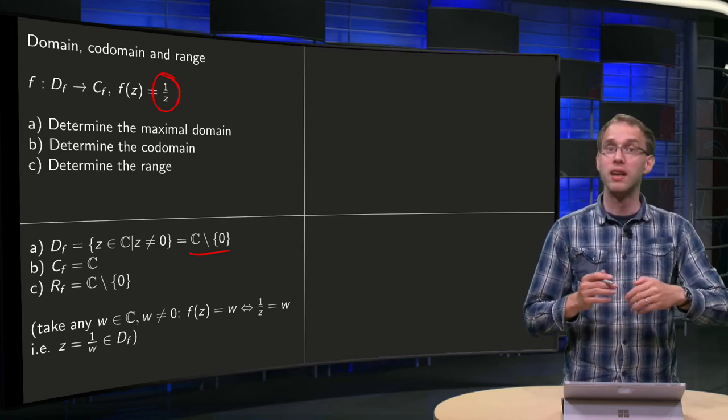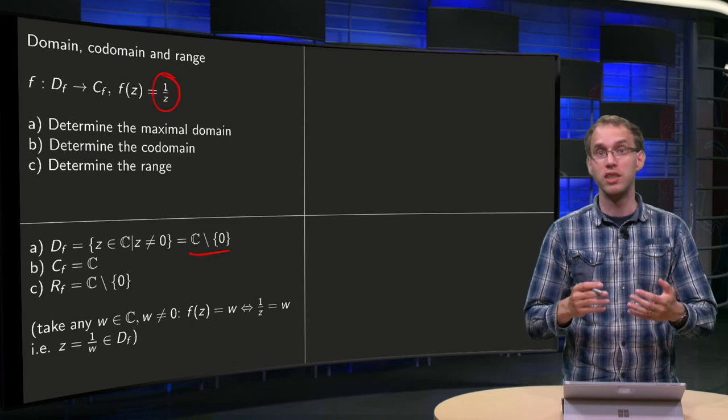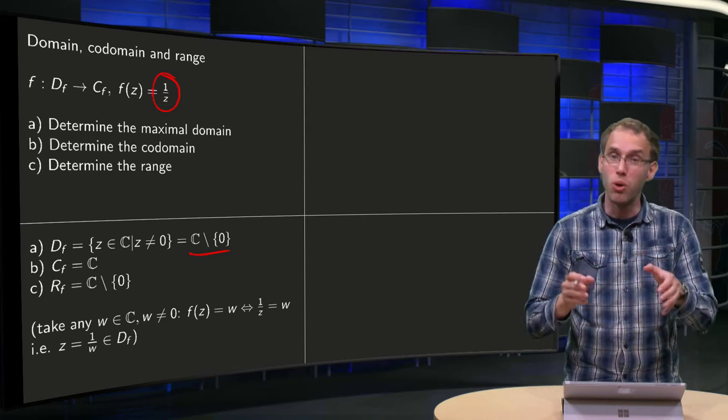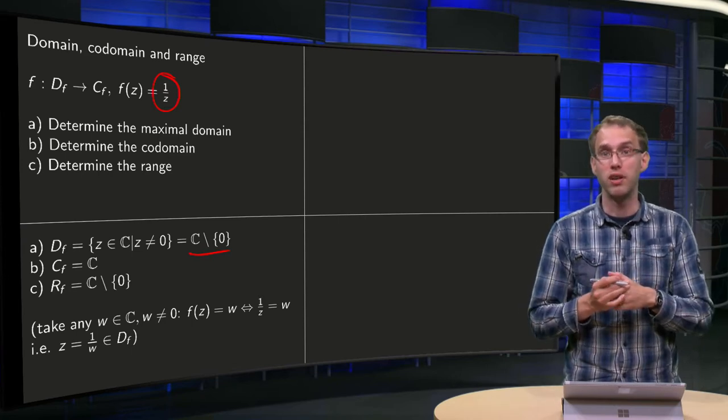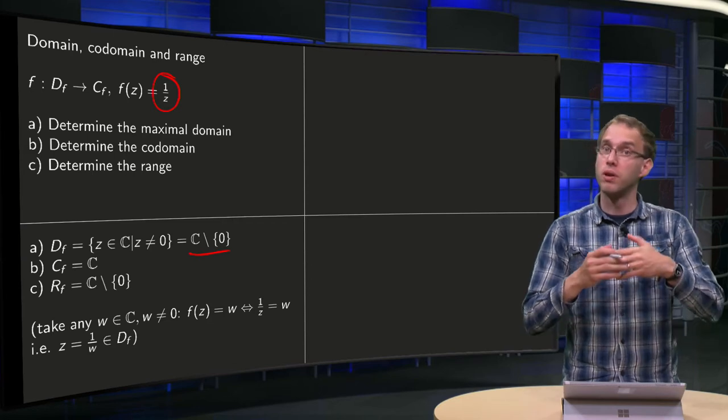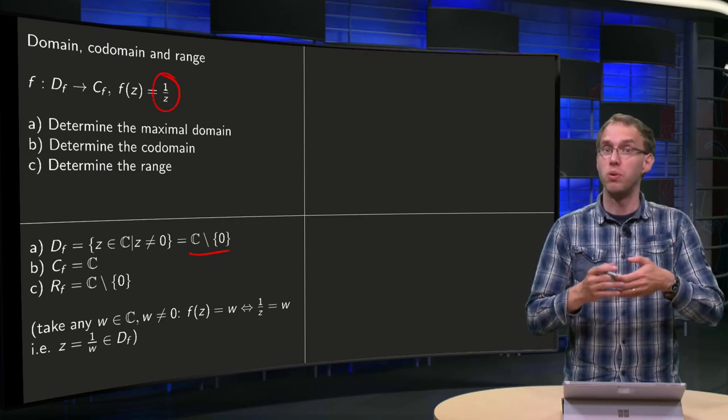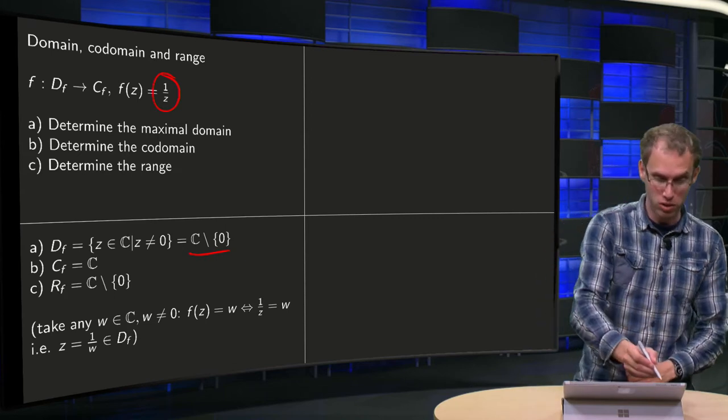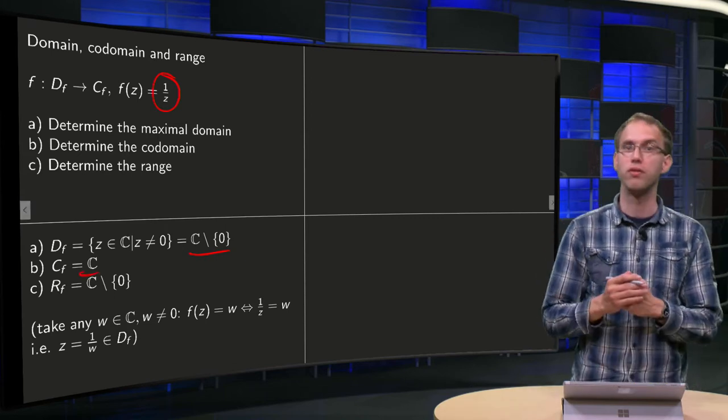What about the codomain? Well, the codomain of a function is the set which contains all the image values. So if you compute 1 over z, you will get a complex number, so as a codomain you can just choose C, all of C.